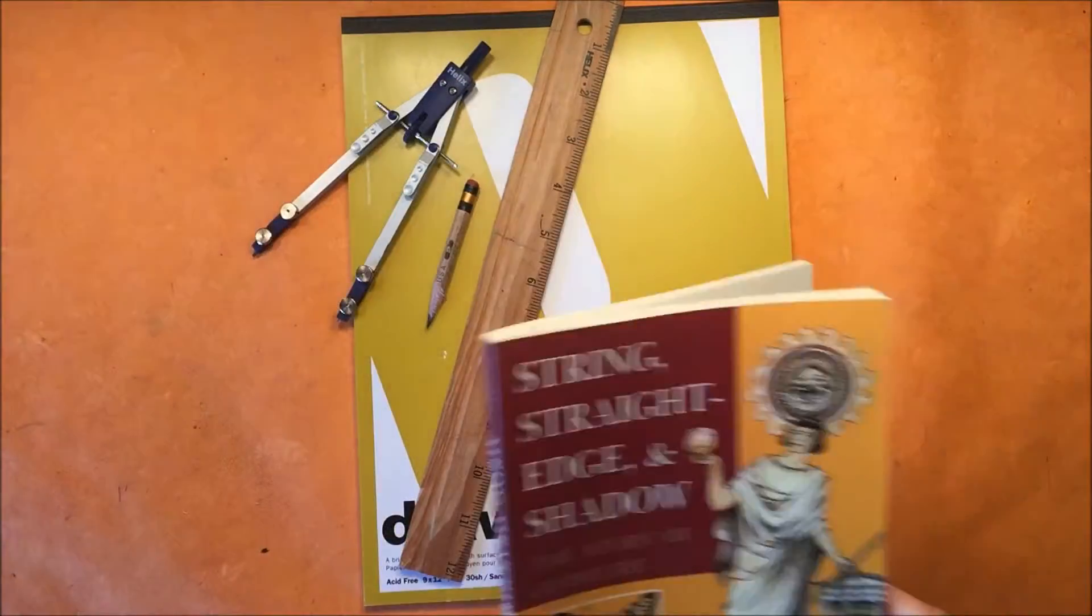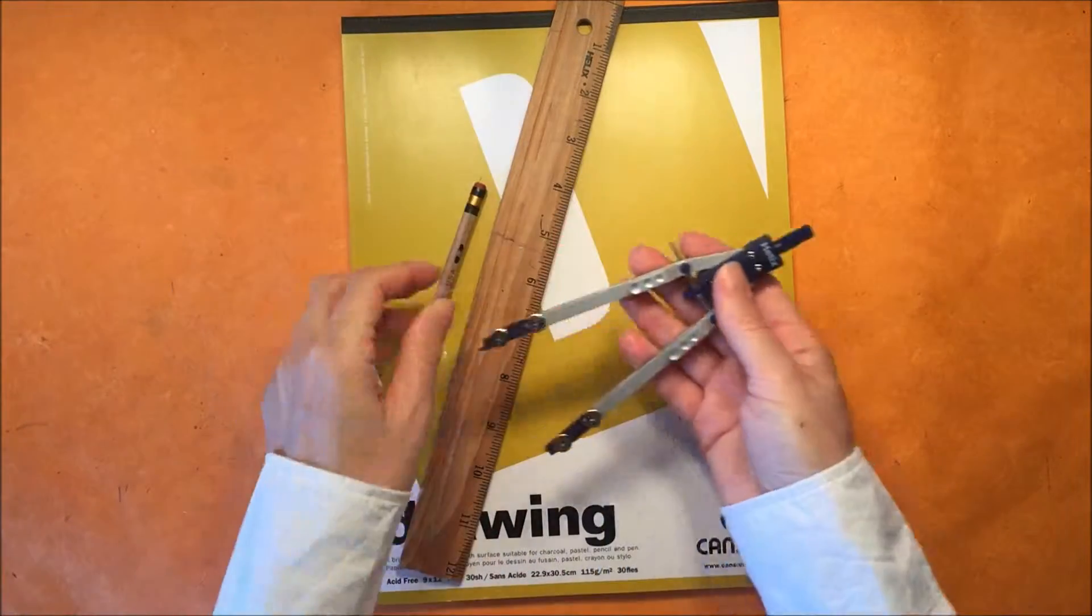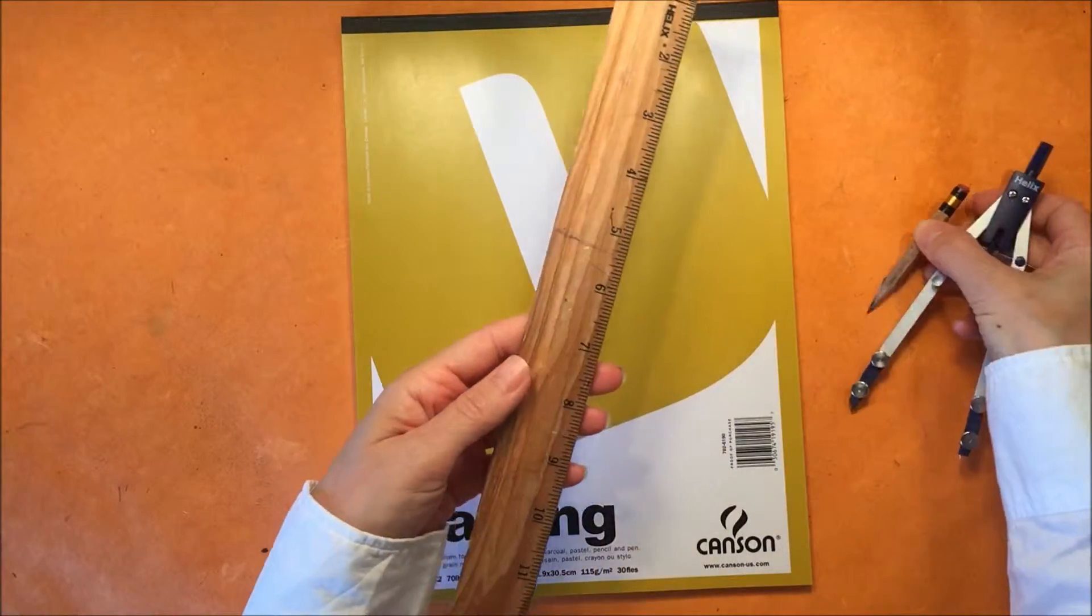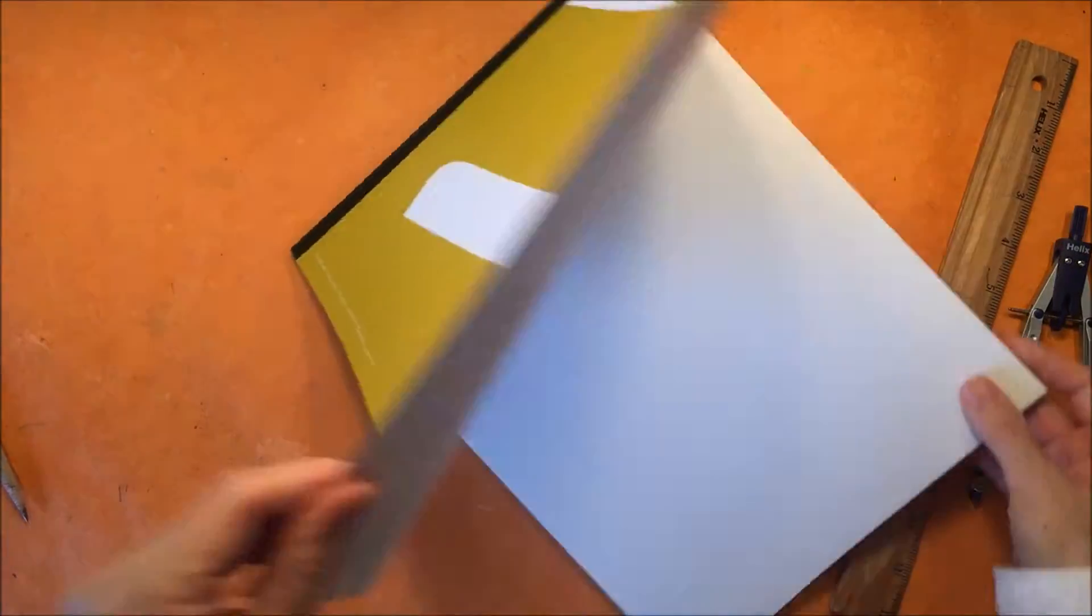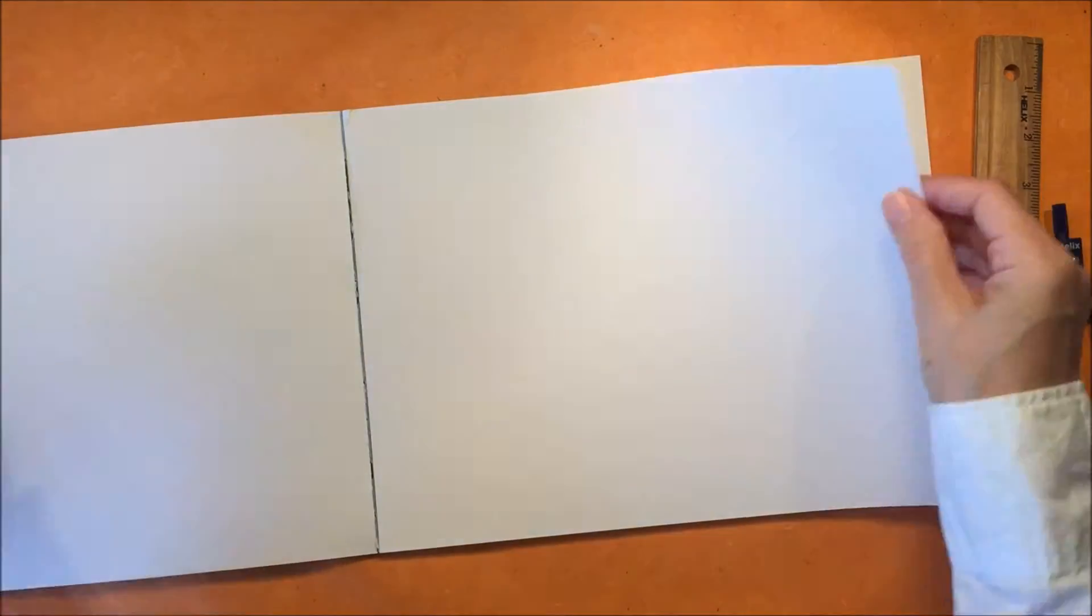So you're going to need a ruler, a compass, pencil, and some paper. I prefer to use this drawing paper because it's a little bit heavier than copy paper.